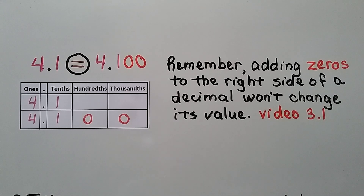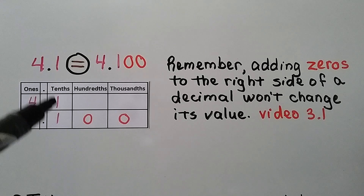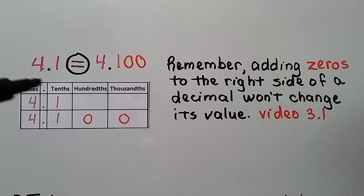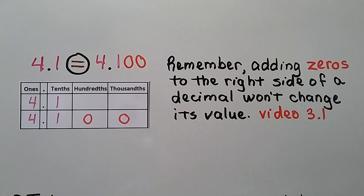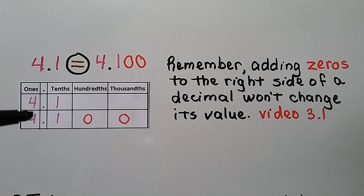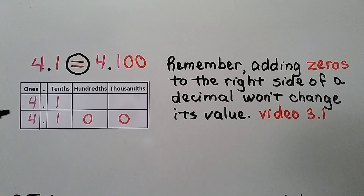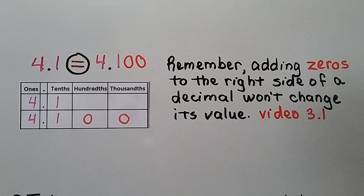Adding zeros to the right side of a decimal won't change its value. We have 4 in the ones place and 1 in the tenths place. One decimal has 2 digits while the other has 4 digits but with trailing zeros — as we learned in video 3.1, the only difference is that the value is expressed in smaller pieces. 4 and one tenth is equal to 4 and one hundred thousandths. If you're confused about that, video 3.1 is linked in the description.